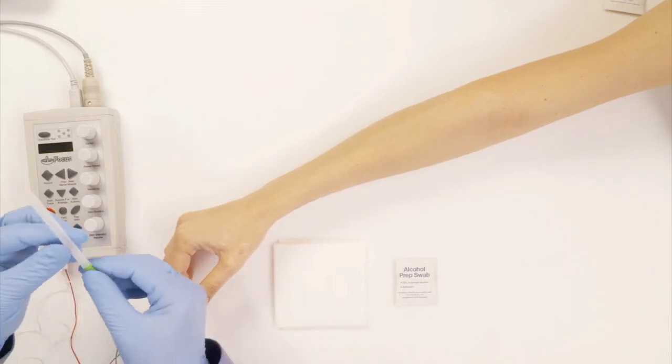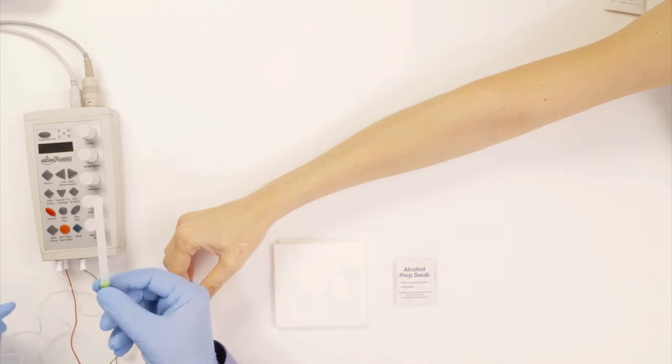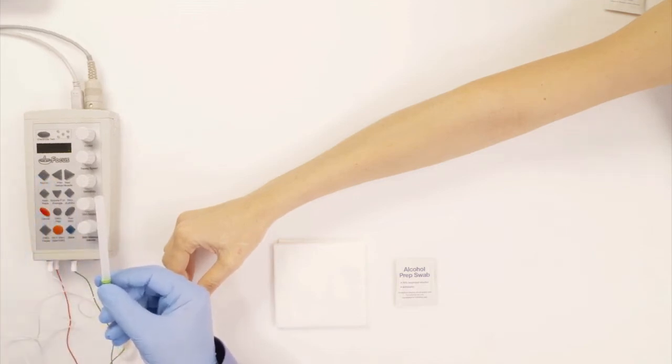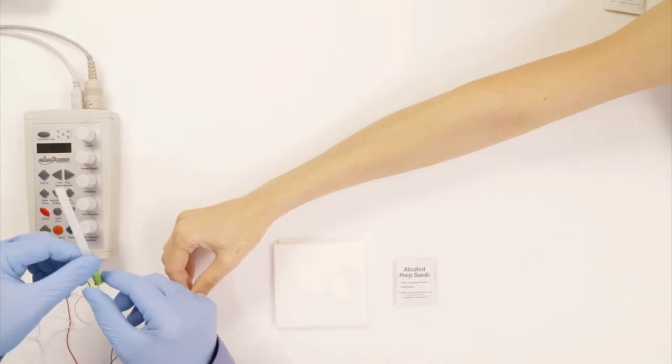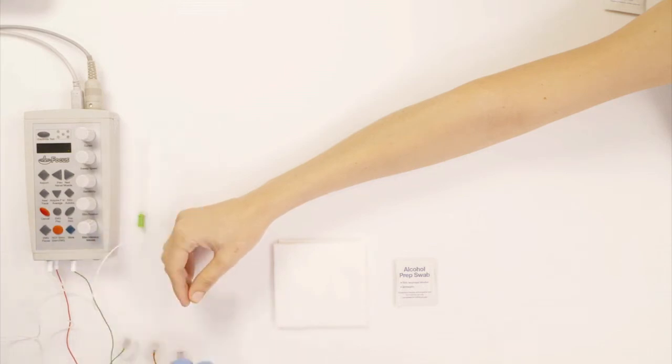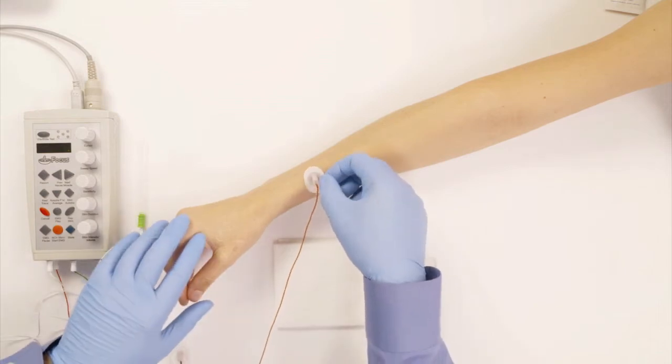So this is the needle. Again, it has sheaths to protect you from sticking yourself and making sure you don't stick the patient in the wrong place either. So I'm going to put this here. And now I'm going to put the reference electrode, first of all. I put it on a bone somewhere nearby. Make sure there's no muscle signals right there.